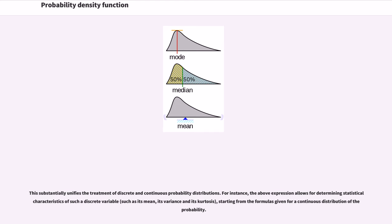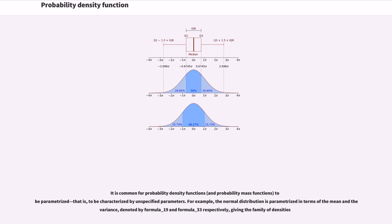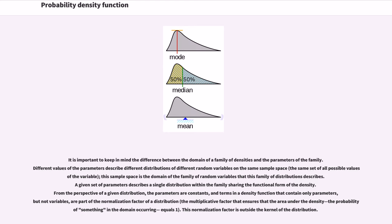It is common for probability density functions to be parameterized — that is, to be characterized by unspecified parameters. For example, the normal distribution is parameterized in terms of the mean and the variance, denoted by μ and σ² respectively, giving the family of densities. It is important to keep in mind the difference between the domain of a family of densities and the parameters of the family. Different values of the parameters describe different distributions of different random variables on the same sample space.